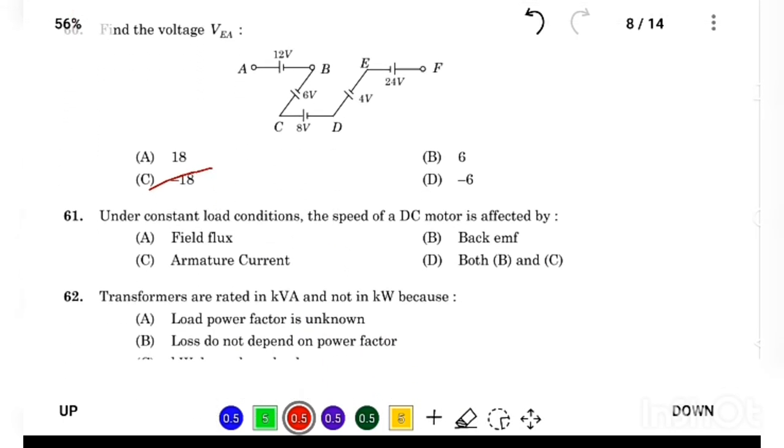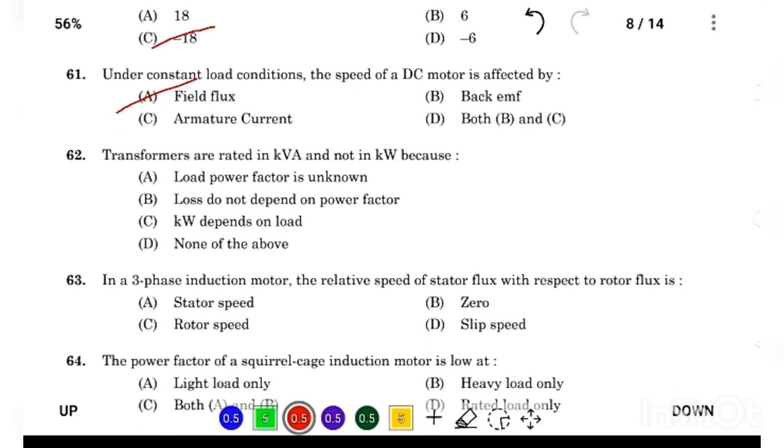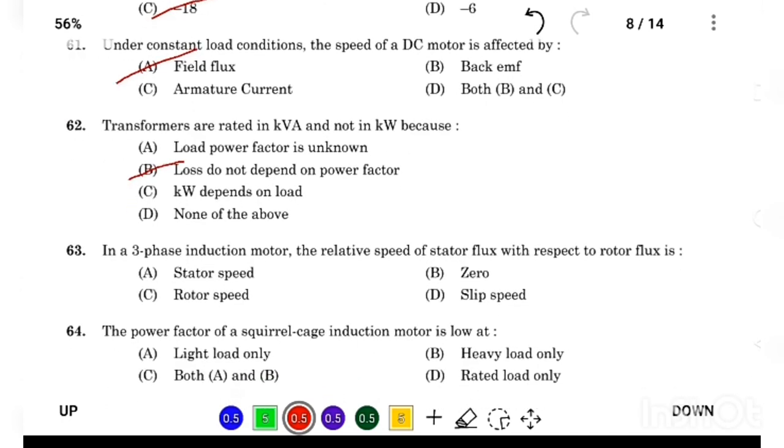Under constant load condition, the speed of DC motor is affected by Answer Option A, field flux. The transformers are rated in kVA and not kW because Answer Option B, loss does not depend on power factor.